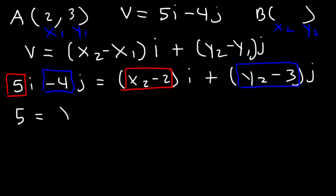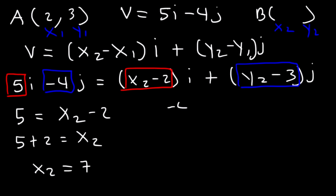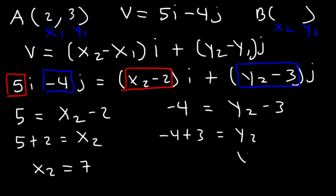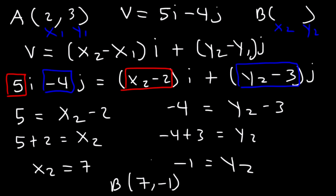So 5 equals x2 minus 2, meaning x2 equals 7. And negative 4 equals y2 minus 3; adding 3 to both sides gives y2 equals negative 1. Therefore point B is (7, -1). You can verify: 2 plus 5 equals 7, and 3 plus negative 4 equals negative 1.